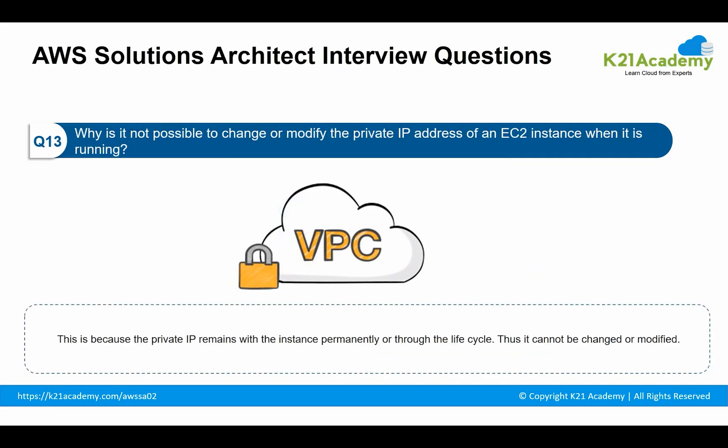Moving to the next question: why is it not possible to change or modify the private IP address of an EC2 instance when it is running? This is because the private IP remains with the instance permanently throughout its lifecycle. Thus, it cannot be changed or modified. However, it is possible to change the secondary private IP address.